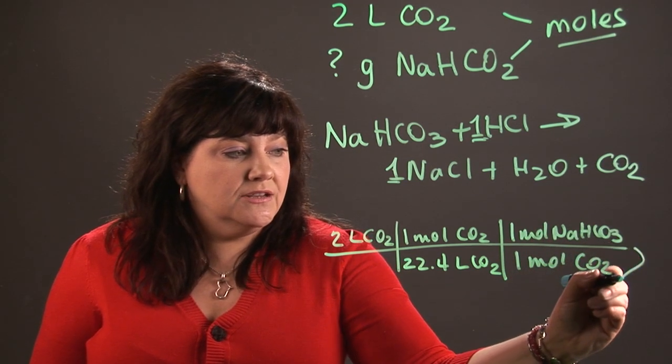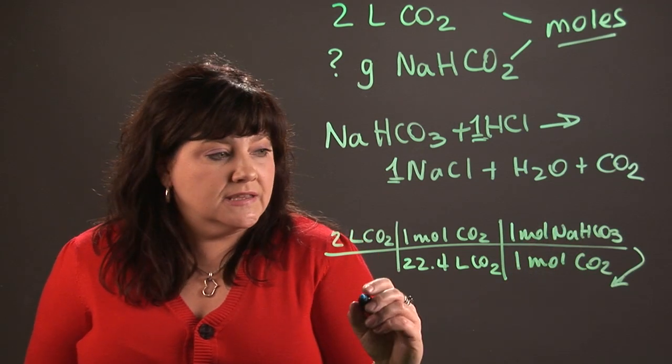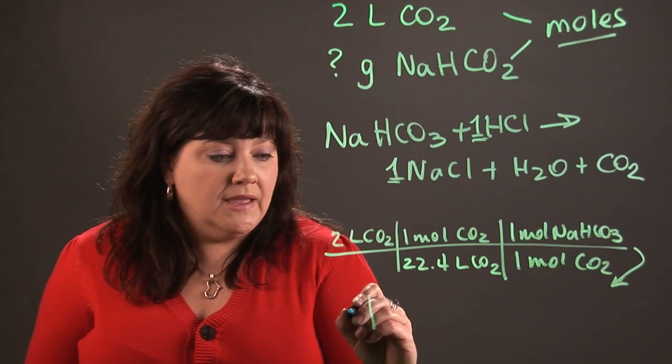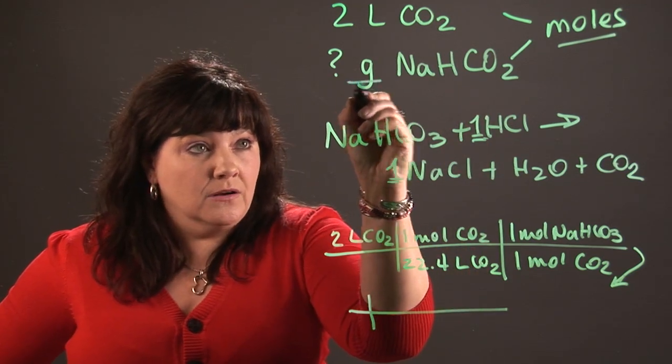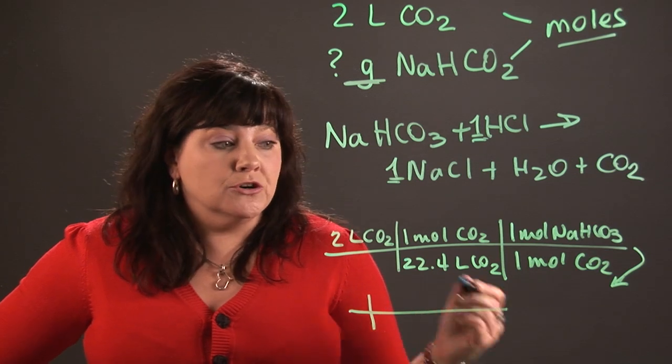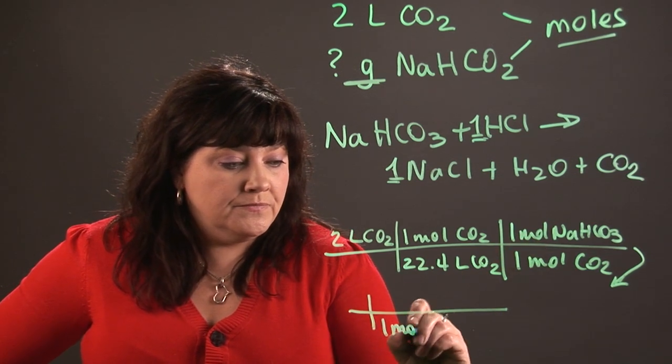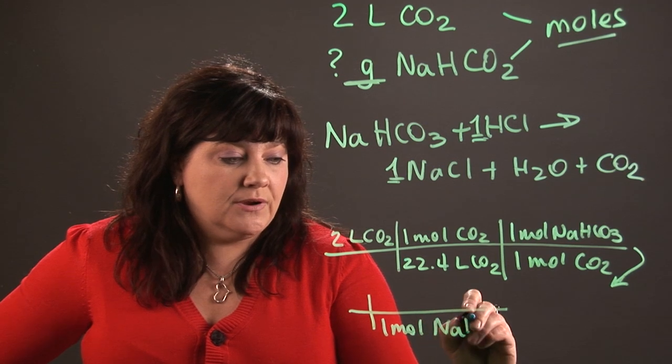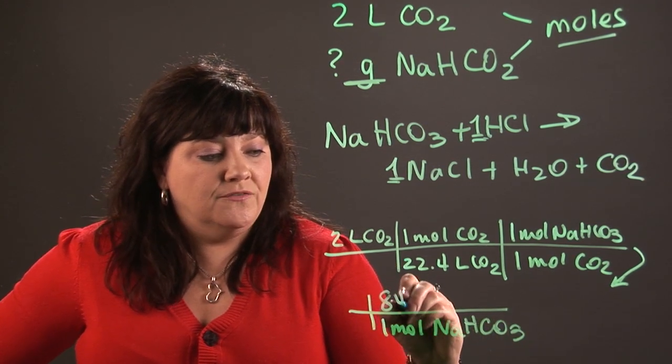Now I'm going to need to continue this on the next line. So I'll come down here. And the next thing that I'm going to set up is the atomic mass of sodium bicarbonate. Because if you see right up here, we want to know how many grams of the stuff that we're going to have. So it turns out that in, and I'm going to put one mole of NaHCO3 on the bottom, turns out that that weighs 84 grams.